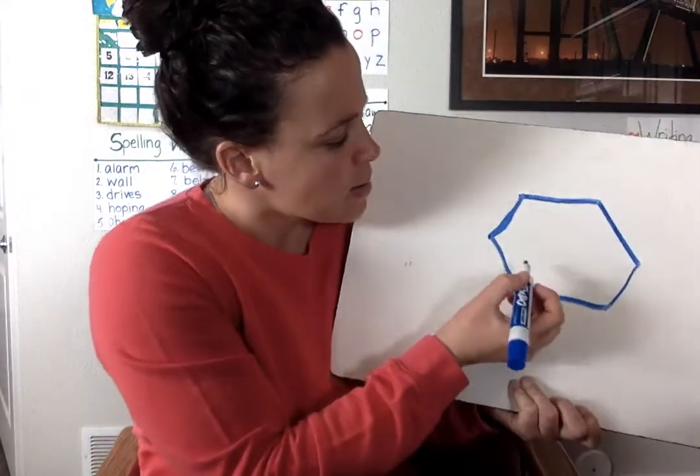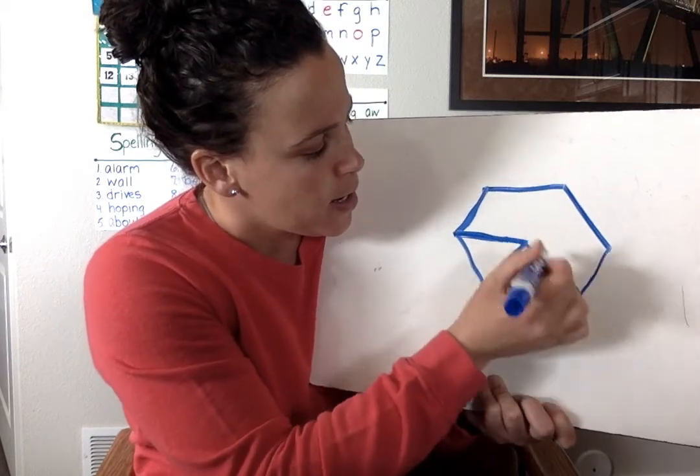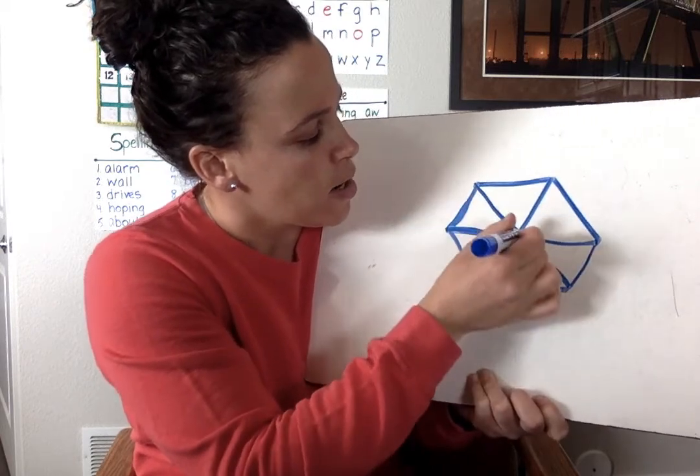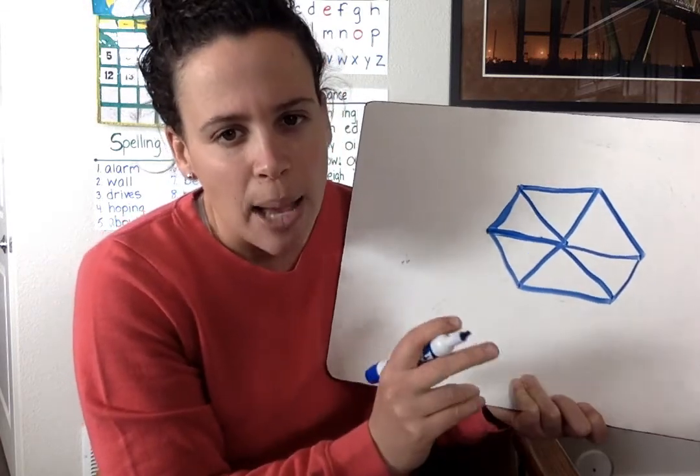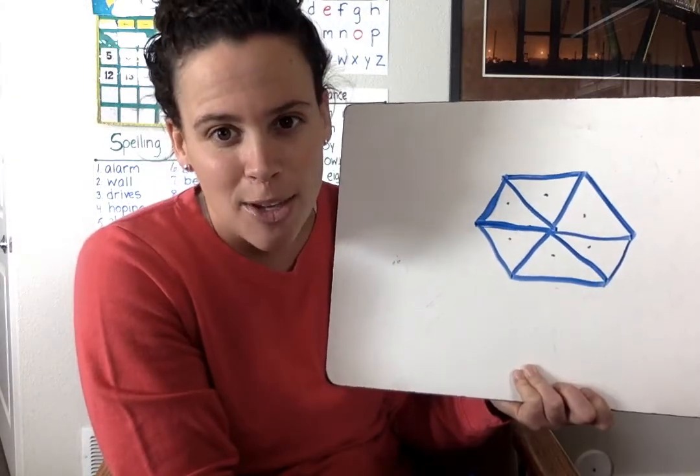But look, this is what I was telling you about with a triangle. Triangle that way, triangle there, triangle there, triangle there, and a triangle there. Lopsided triangles. But you have six triangles that make a trapezoid.